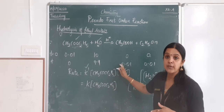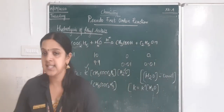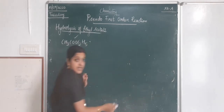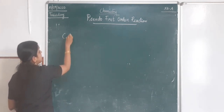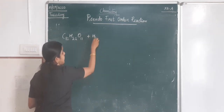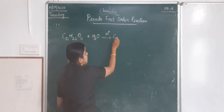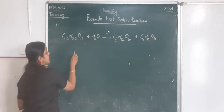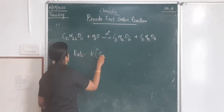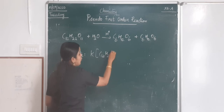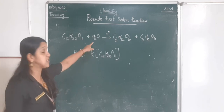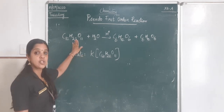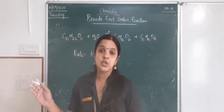Another example is the inversion of cane sugar: C₁₂H₂₂O₁₁ + H₂O → 2C₆H₁₂O₆, hydrolyzed in the presence of a mineral acid. Again, the rate is written as: rate = k[C₁₂H₂₂O₁₁], because the concentration of water remains constant. Since the rate depends on only one reactant concentration, such reactions are called pseudo first-order reactions.